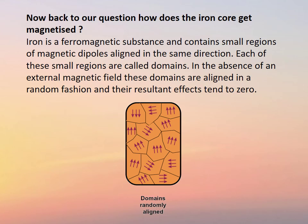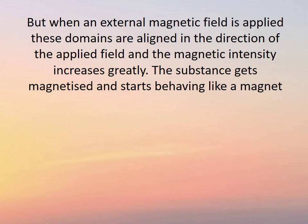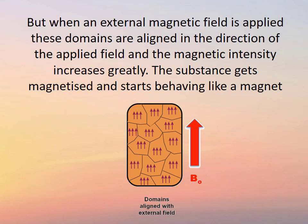In the absence of an external magnetic field, these domains are aligned in a random fashion and their resultant effects tend to zero. But when an external magnetic field is applied, these domains are aligned in the direction of the applied field and the magnetic intensity increases greatly. The substance gets magnetized and starts behaving like a magnet.